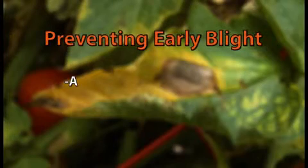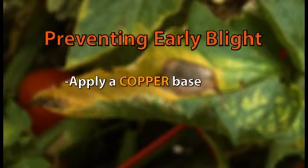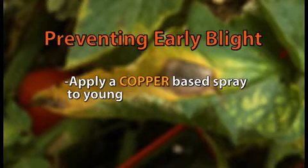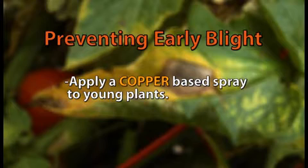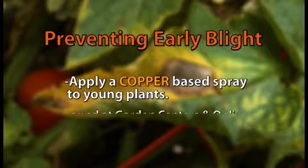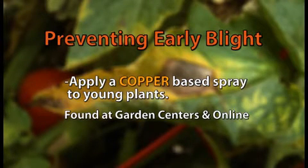Early blight will start to appear when the weather is hot and humid and temperatures are between 75 and 85 degrees. To help prevent the onset of early blight, apply a copper-based spray to young plants, which you can find at garden centers and also online.